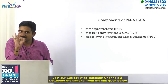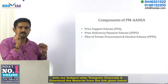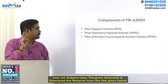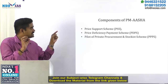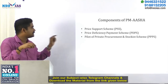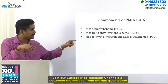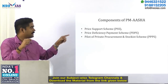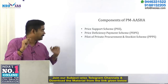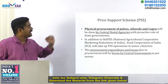PM ASHA has three key components. The first component is PSS — Price Support Scheme. The second is PDPS — Price Deficiency Payment Scheme. The third is PPPS — Pilot of Private Procurement and Stockist Scheme. Let us now quickly see the details of each of these components.